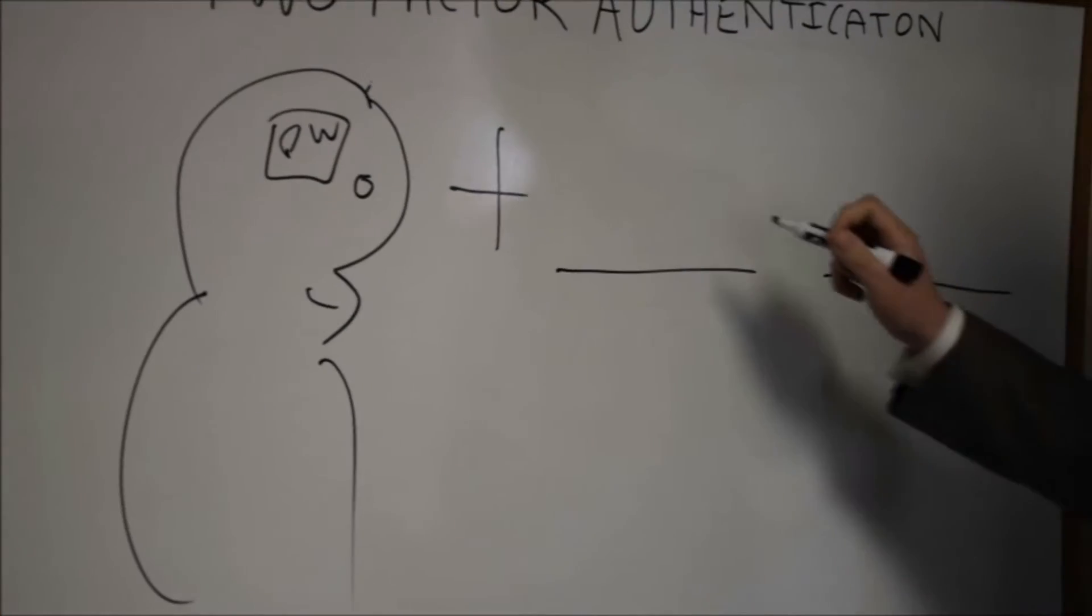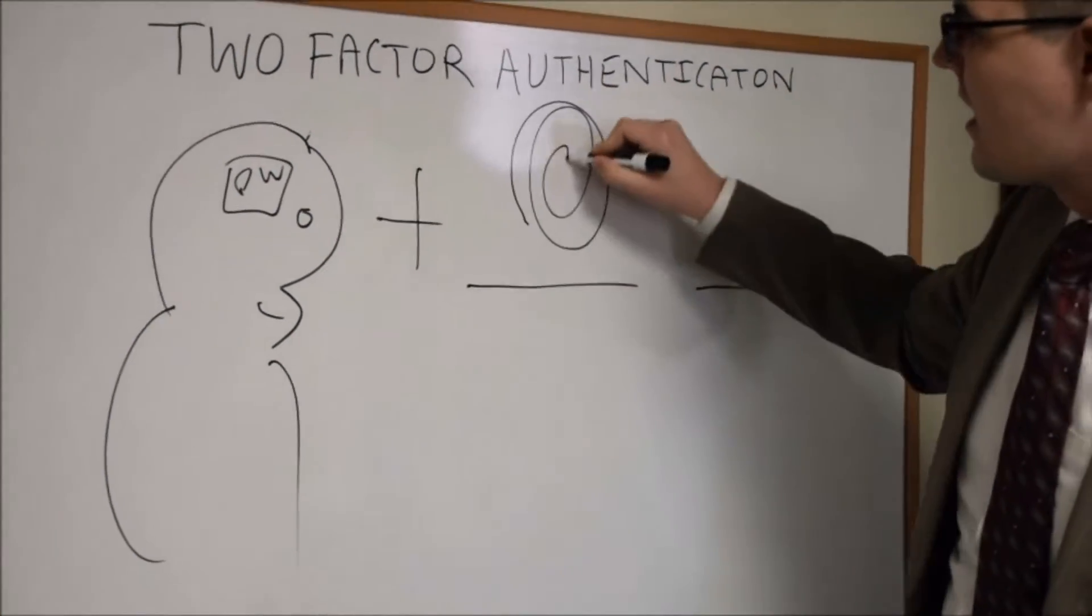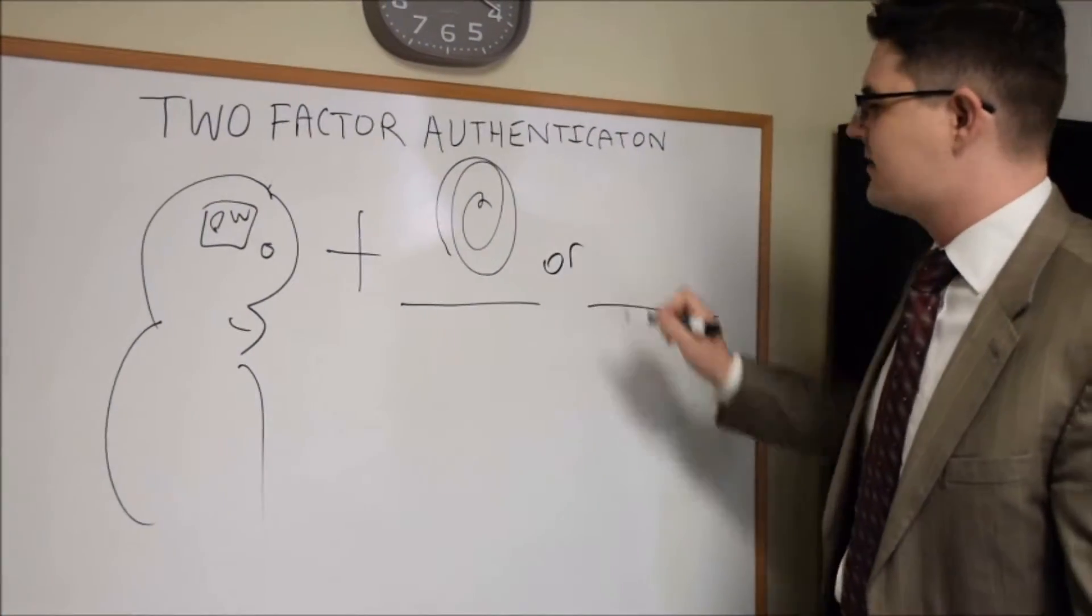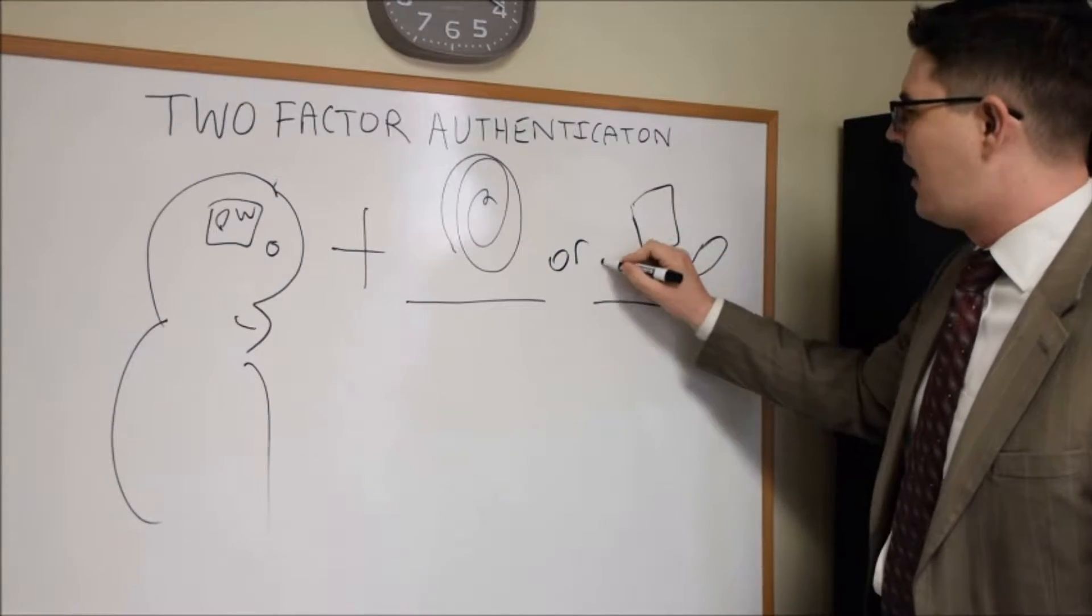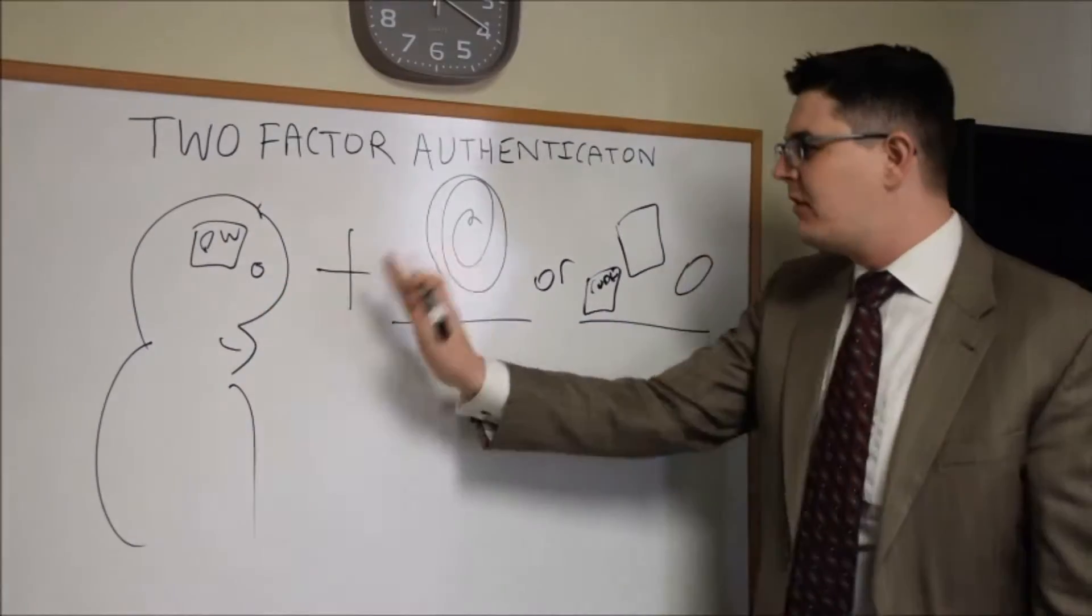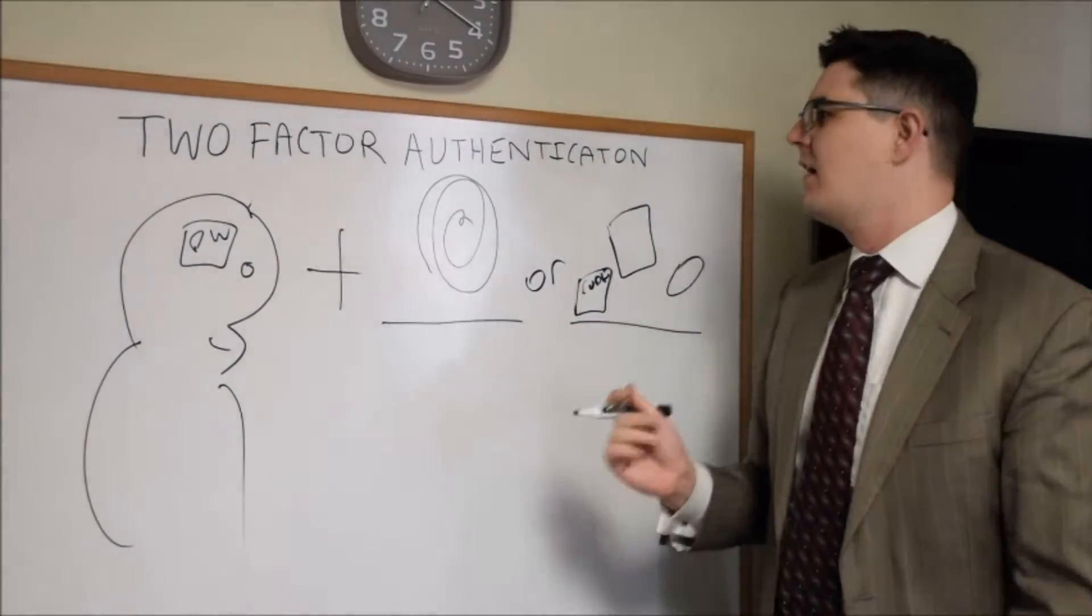Plus something else. It's going to be one of two things - something you are, like a thumbprint, that's something that's on your person. Or something you have, that could be like a badge or a token or on your cell phone, you can get a code. So it's a password plus one of these other things. That's why it's called two-factor or two-step authentication.